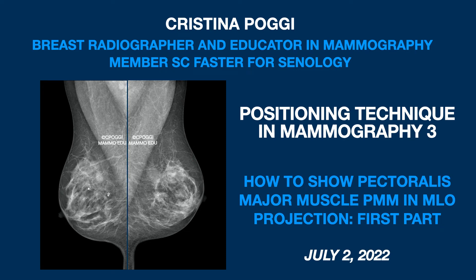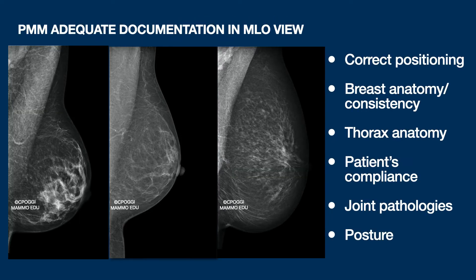Hello everyone. Today we are talking about how to show the Pectoralis Major muscle in MLO projection in mammography. There are many factors to be taken into account. First of all, the correct positioning, which must be adjusted to the anatomy of the breast and of the thorax of the patient.